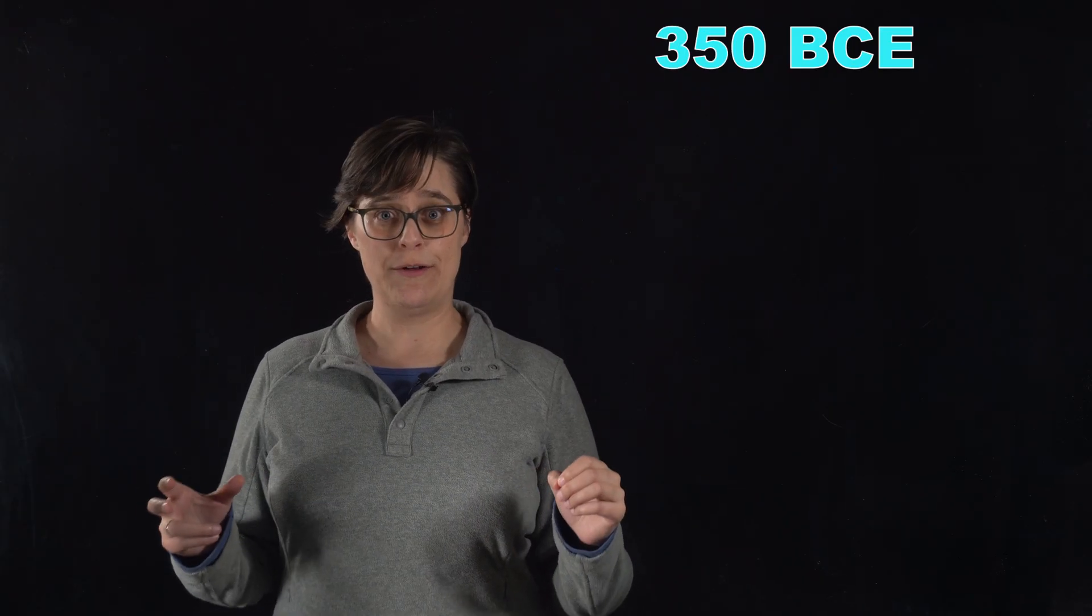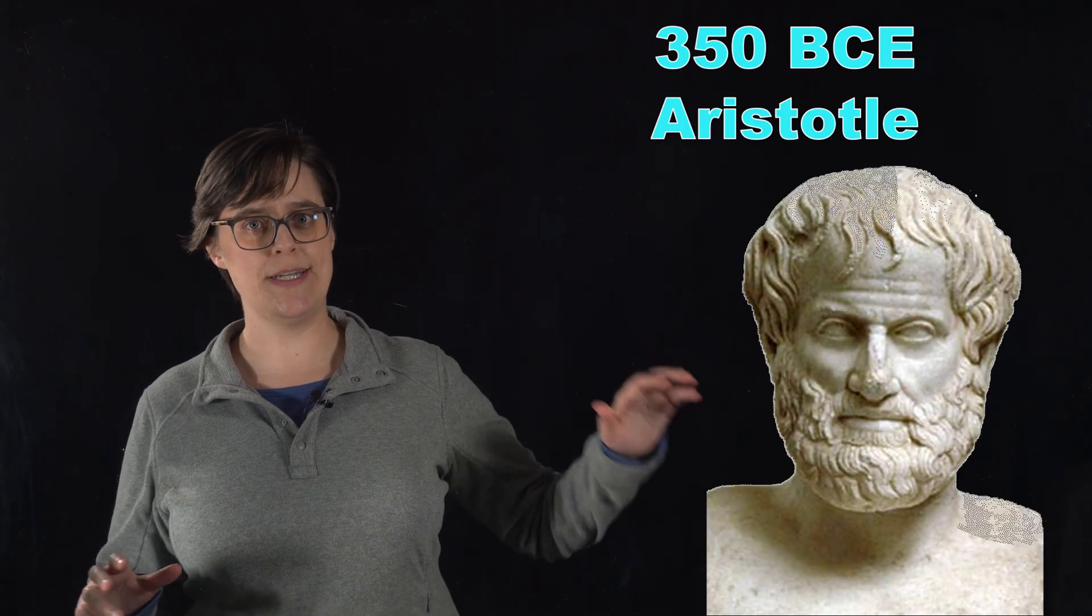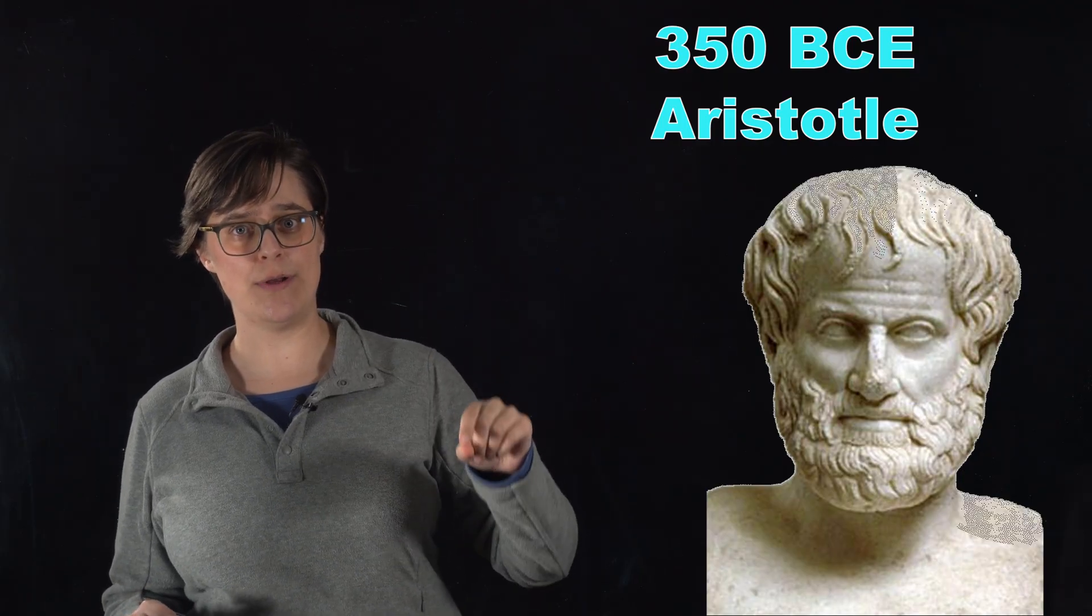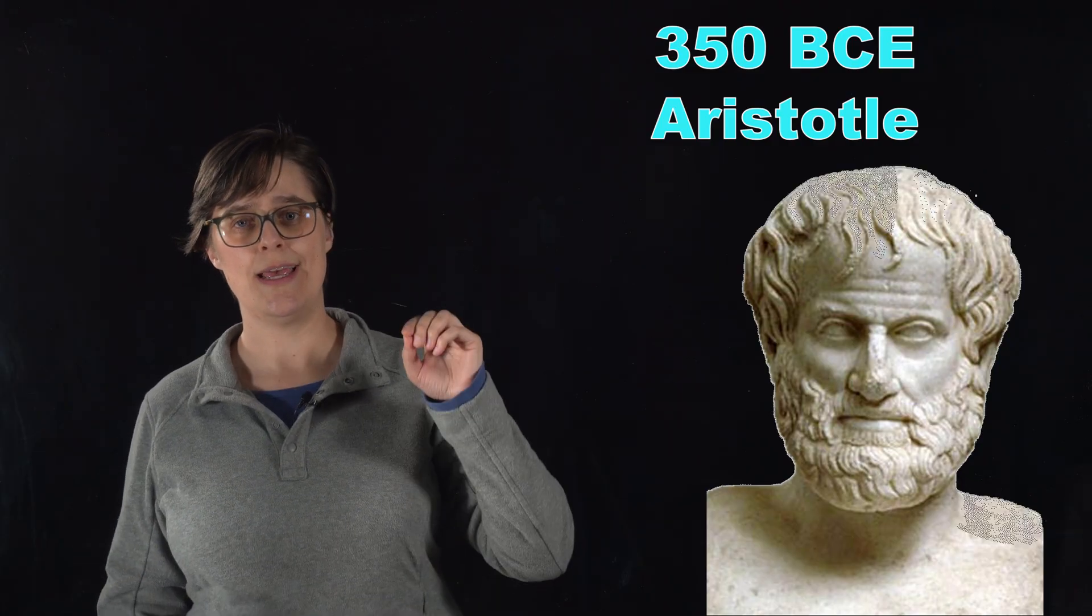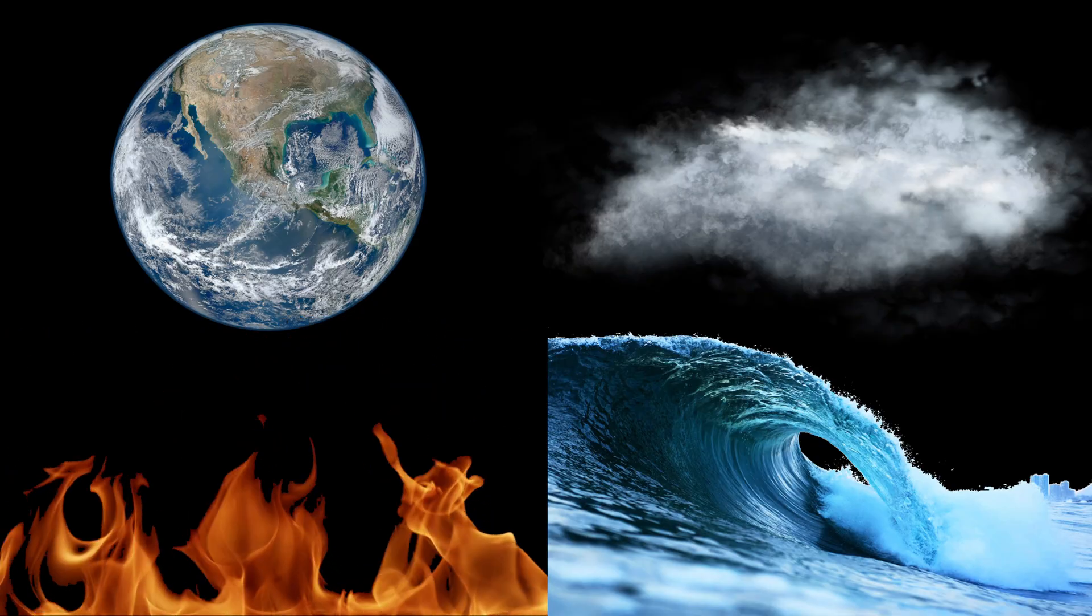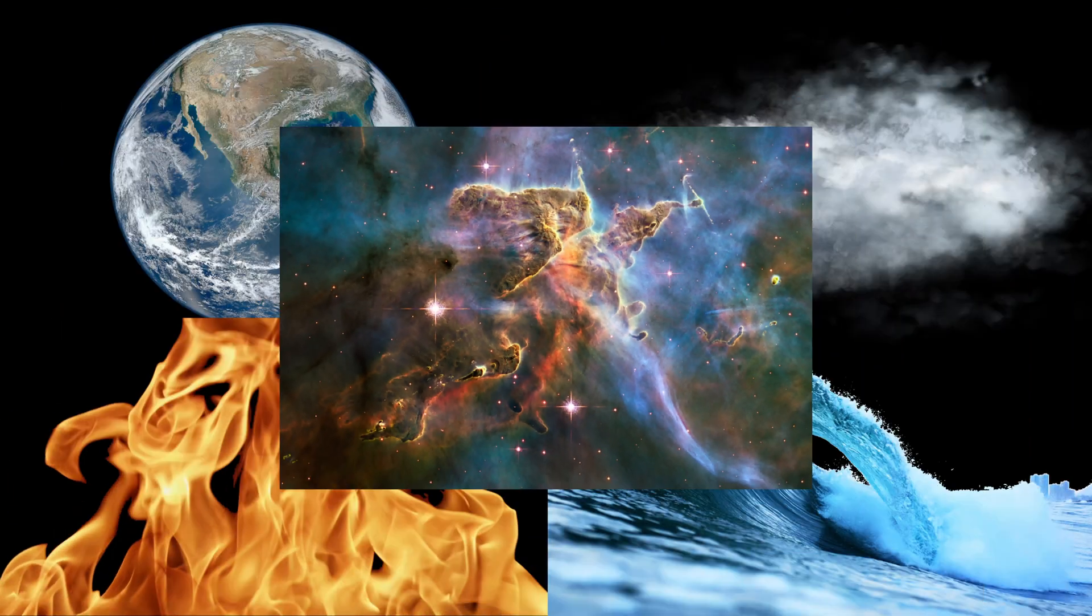A century later, around 350 BCE, Aristotle came along and rejected Leucippus and Democritus's atomic theory. He argued that atoms and empty space could not exist. Aristotle refined Empedocles' four-element theory. He added the concept of qualities to each, and he added a fifth element.